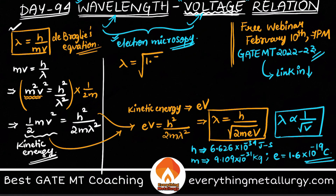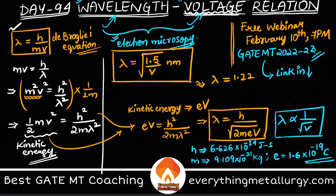Substituting, you directly get λ = √(1.5/V) nanometers, where V is in volts. Taking the square root of 1.5, the final equation becomes λ = 1.22 / √V nanometers. Note that this equation can appear in different forms depending on whether wavelength units are in nm or Å, and whether voltage is in volts or kilovolts.